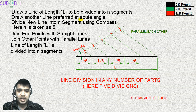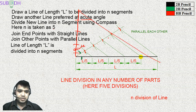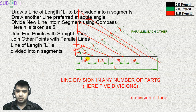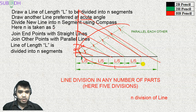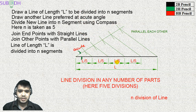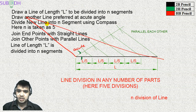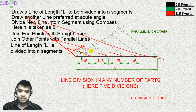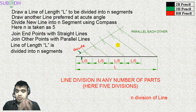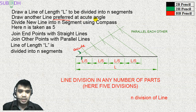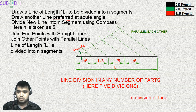Now, why do we prefer an acute angle? If we used a perpendicular line instead, the method still gives equal division. However, when the auxiliary line is perpendicular, the parallel lines dropped from the marked points may not intersect the original line clearly within the drawing space. At an acute angle, the intersection points fall neatly on the original line. In some cases, using an acute angle is actually necessary, not just preferred.